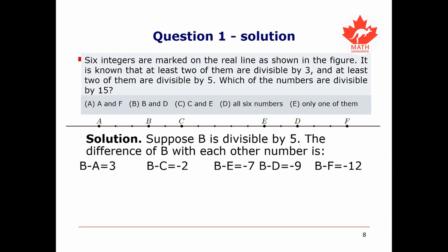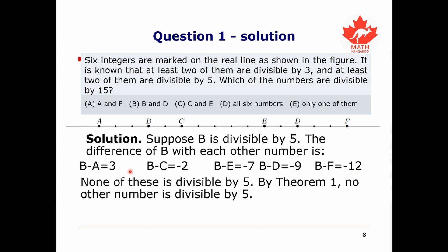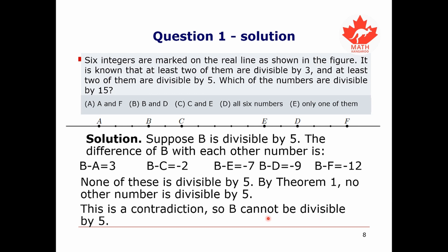Suppose b is divisible by 5. The differences of b with each other number are: b minus a equals 3, b minus c equals negative 2, b minus e equals negative 7, b minus d equals negative 9, and b minus f equals negative 12. None of these differences is divisible by 5, so by our theorem, no other number among these can be divisible by 5. Since the question states at least two numbers are divisible by 5, b cannot be divisible by 5 as this leads to a contradiction.